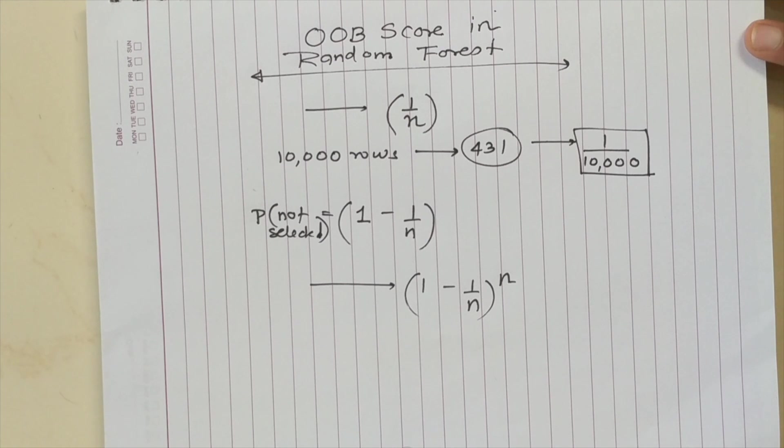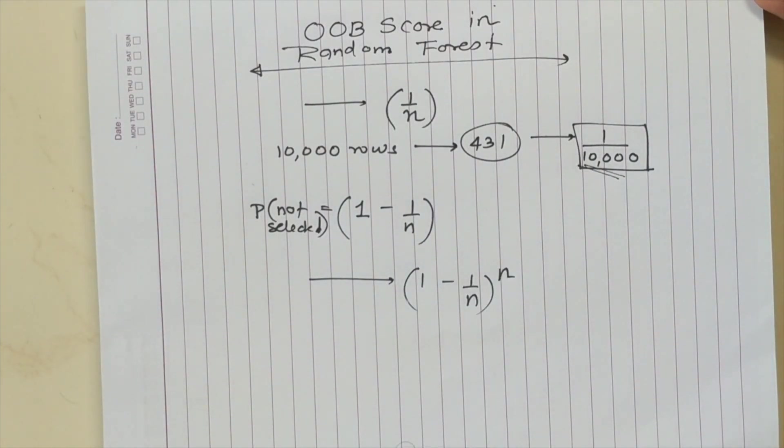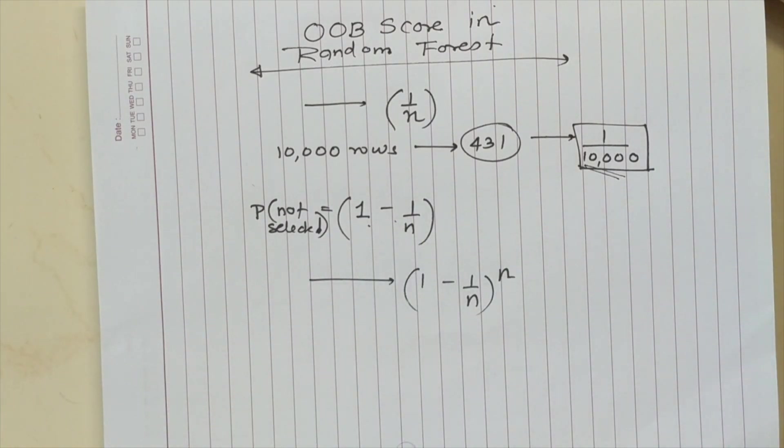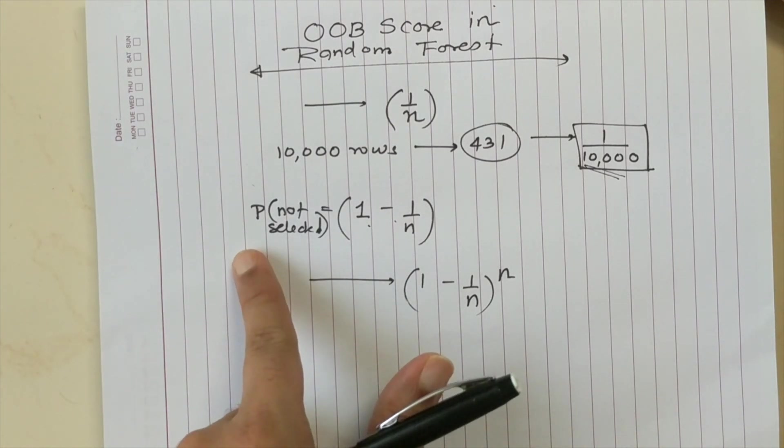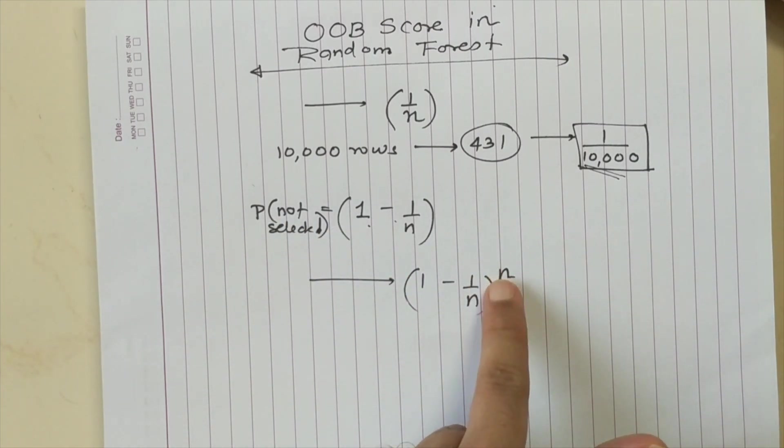I again repeat, I want to find out the probability of not selecting a row entirely while creating a bootstrap sample. So for the first draw, if I select one particular row, the probability of it being selected is 1 minus 1 by N. If you take this trial independently for N times, then the probability of that row being not selected in N trials is 1 minus 1 by N raised to power N.